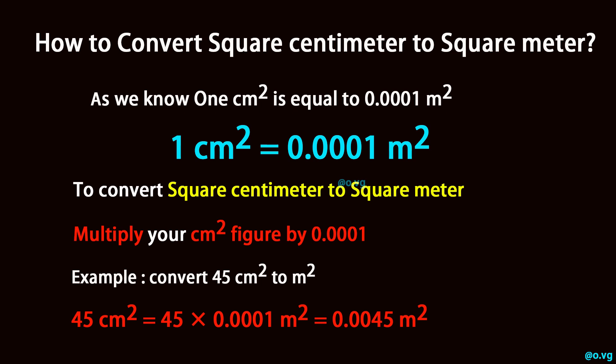To convert square centimeter to square meter, multiply your square centimeter figure by 0.0001.